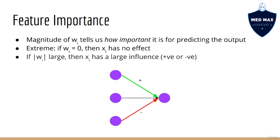Now imagine that w_i is very large in magnitude — note that it can be either very positive or very negative. This means that x_i has a large influence on the output, because a small increase in x_i leads to a large increase in the output. That's just another way of saying that this input feature is very important. Also, the sign of w_i controls the direction of the influence. If w_i is very positive, then an increase in x_i will lead to a large increase in the output. If w_i is very negative, then an increase in x_i will lead to a large decrease in the output.